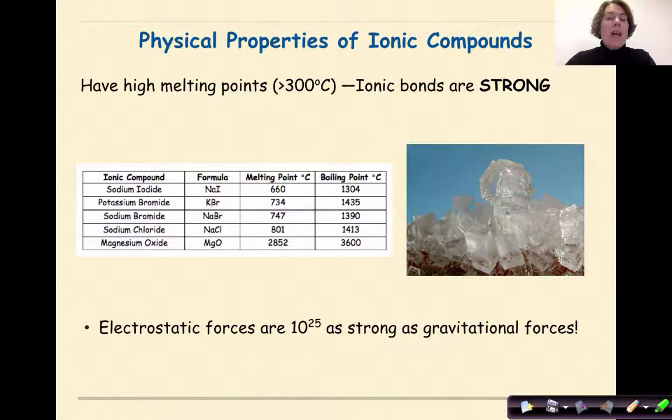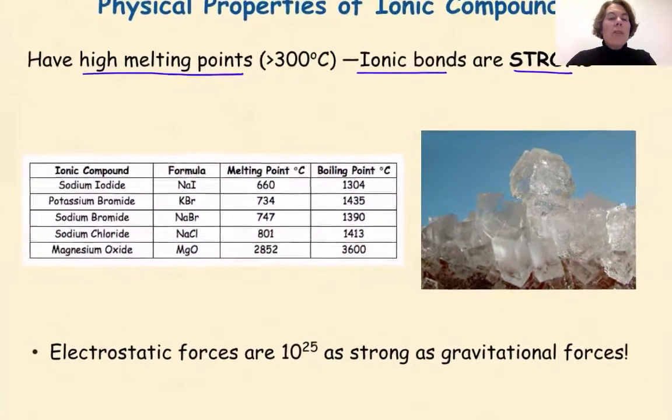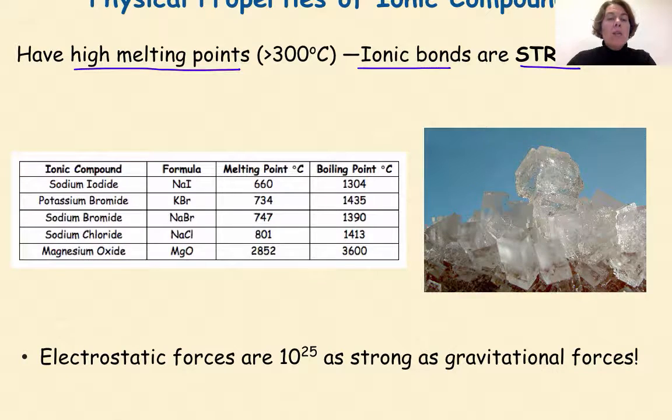Ionic compounds tend to have high melting points, greater than 300 degrees Celsius. Therefore, ionic bonds in general are quite strong. So here we have a chart of some ionic compounds, their formulas, their melting points, and their boiling points. The higher the melting point and the boiling point, the stronger the ionic bond.